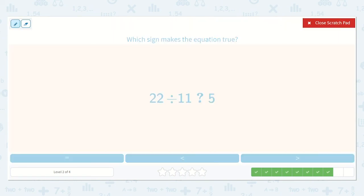Now we have 22 divided by 11. And then we have 5. Well, let's count by 11's. 11, 22. Oh, really need to count twice. 11, 22. So it is 2. And 2 is less than 5. So we'll do the less than symbol.